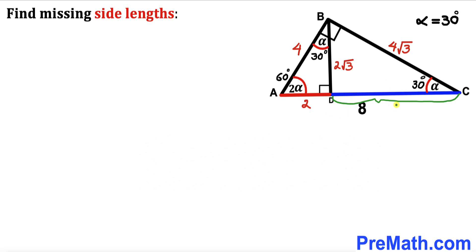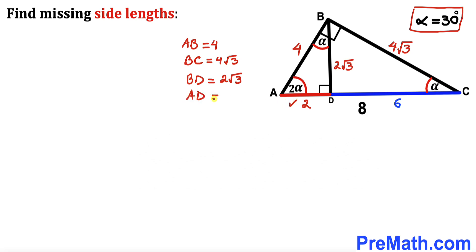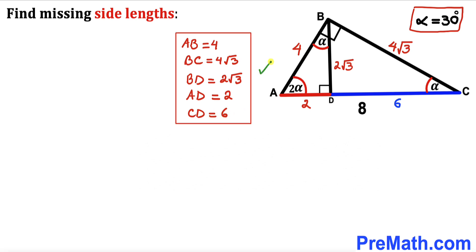For the final step, the whole side AC is 8 units and AD is 2 units, so the remaining segment CD is 8 minus 2, which gives 6 units. To summarize: alpha is 30 degrees, AB is 4 units, BC is 4 times square root of 3 units, BD is 2 times square root of 3 units, AD is 2 units, and CD is 6 units. Thanks for watching and please subscribe for more exciting videos.